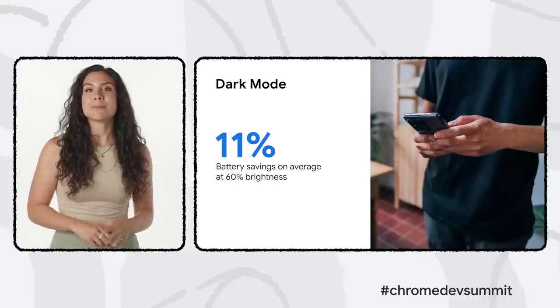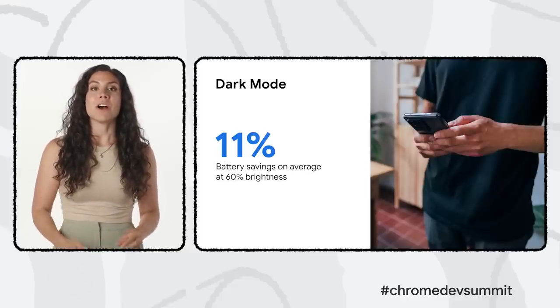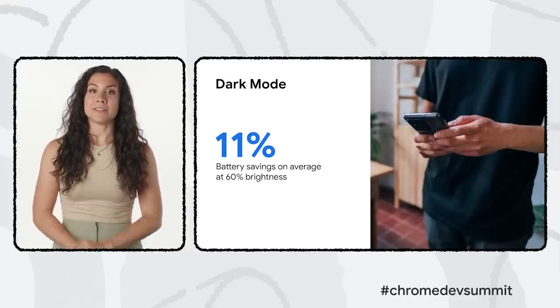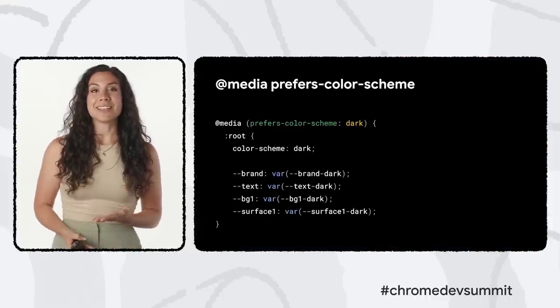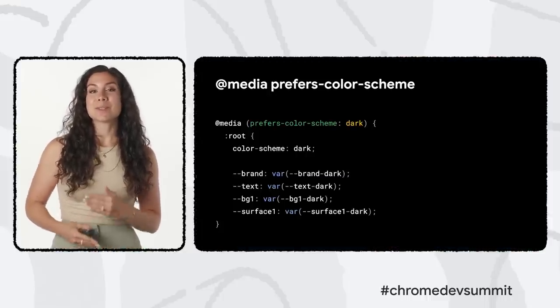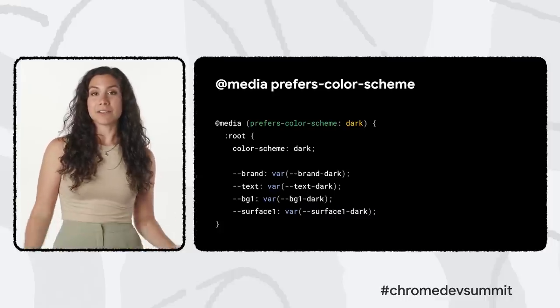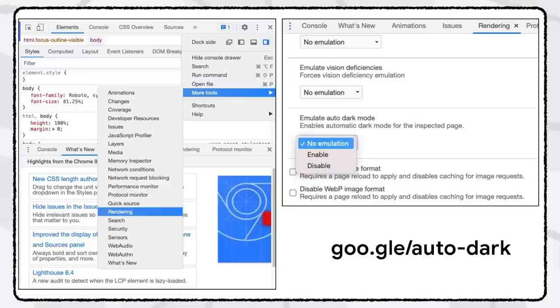Dark themes have shown measurable battery life savings over light-themed counterparts on OLED devices. To create a dark theme, Chrome recommends using CSS custom properties and the Prefers Color Scheme media feature, which is supported in all evergreen browsers. Chrome is also working on a machine-learning-aided auto-dark algorithm feature to make this even easier for development teams.